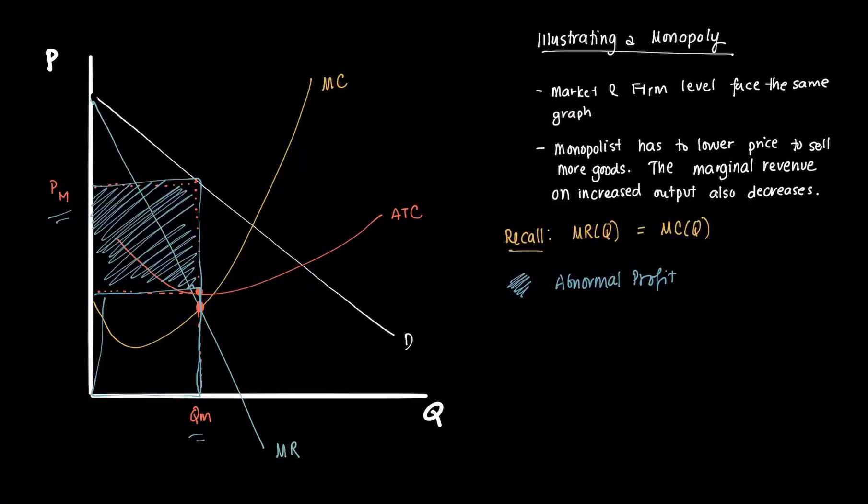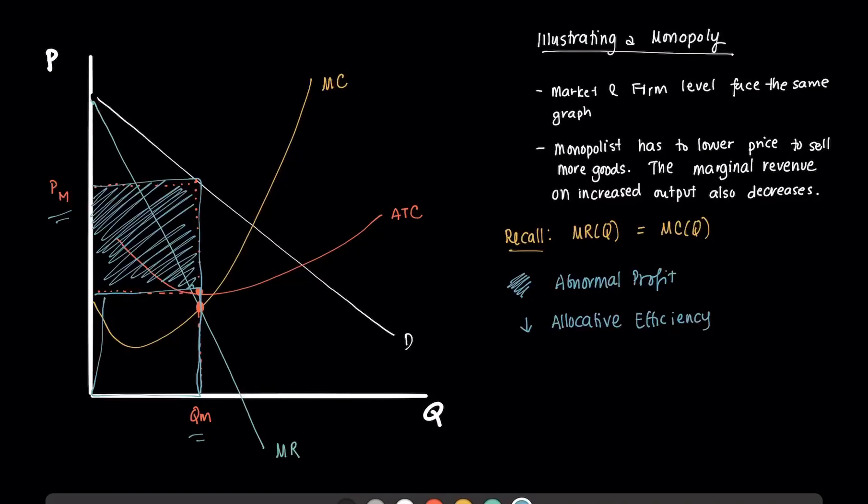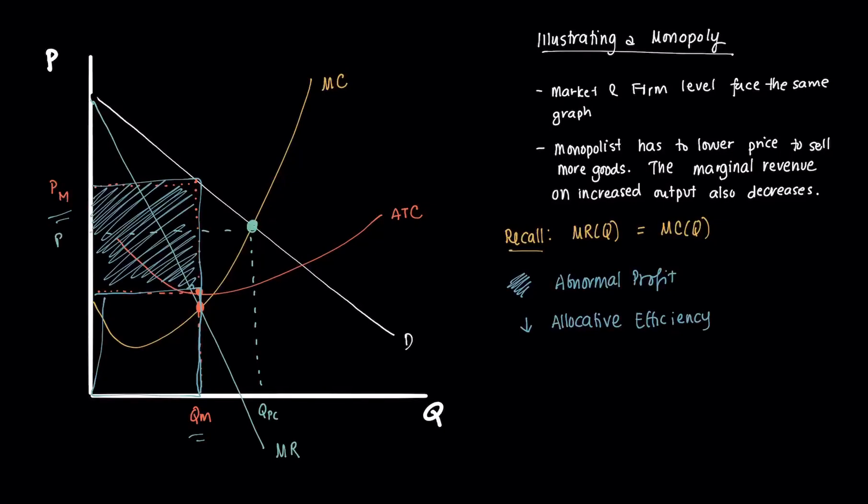One thing that we'll note, and we'll discuss this more in the other videos to follow, is that compared to a perfectly competitive market, there is a lower allocative efficiency. Because in the case of a perfectly competitive firm, if the firm were operating perfectly competitively, the condition that it would set would be P equals MC. So it would produce somewhere here with quantity QPC, and the price that would be charged would be much lower at PPC.